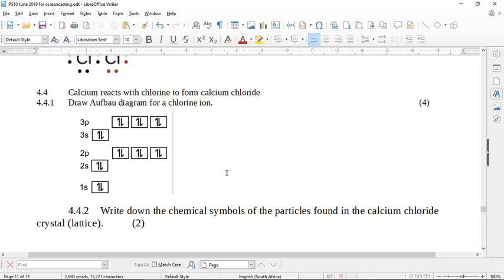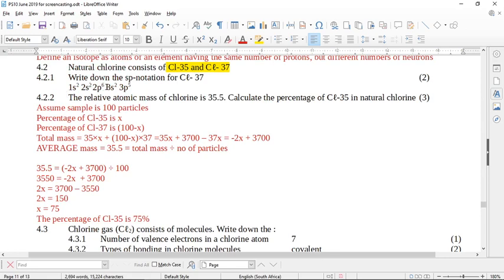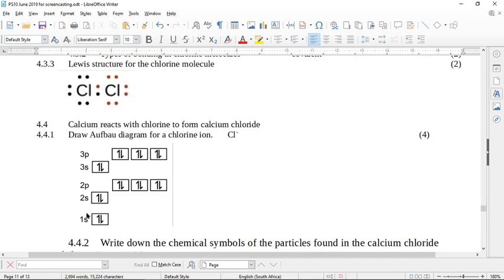Then it says calcium reacts with chlorine to form calcium chloride. Draw an Aufbau diagram for a chlorine ion. So a chlorine ion is actually Cl minus. If you are Cl minus, you have a negative charge. It means you have gained an electron. So you then need to have eight electrons in your outermost shell. So based on this SP notation here, 1s2, 2s2, 2p6, 3s2, 3p5. If you come back here, here it is. 1s2, 2s2, 2p6, 3s2. And if it was just chlorine, you would have five electrons in this outermost orbital. But because it is the ion, you have to put in the eighth electron. So this is a chlorine ion.